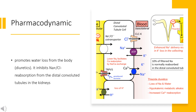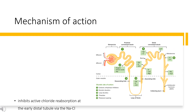Natriuresis may be accompanied by some loss of potassium and bicarbonate. After oral doses, 10–15% of the dose is excreted unchanged in the urine. Chlorothiazide crosses the placental barrier, but not the blood-brain barrier, and is excreted in breast milk.